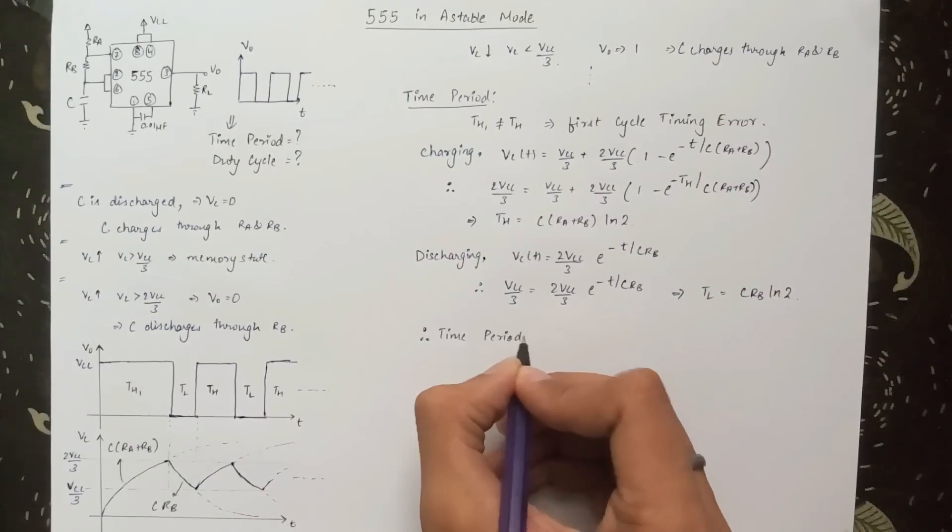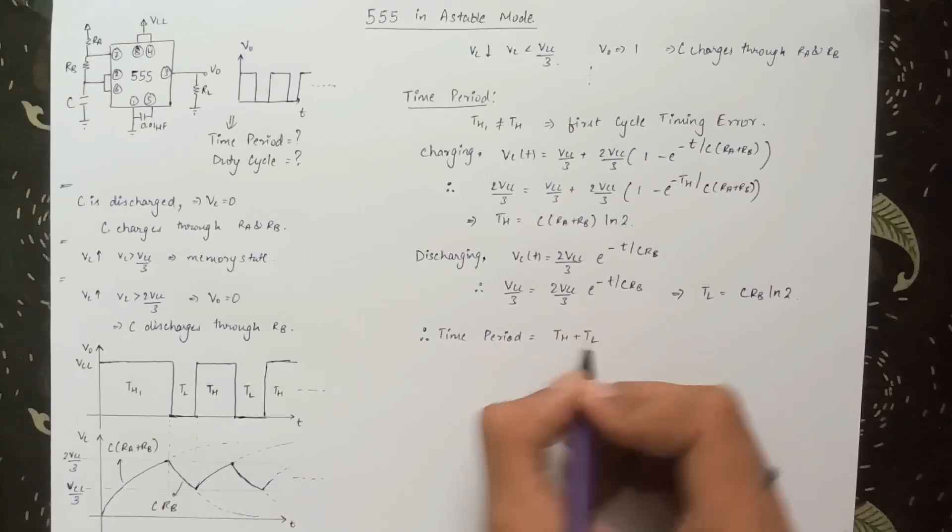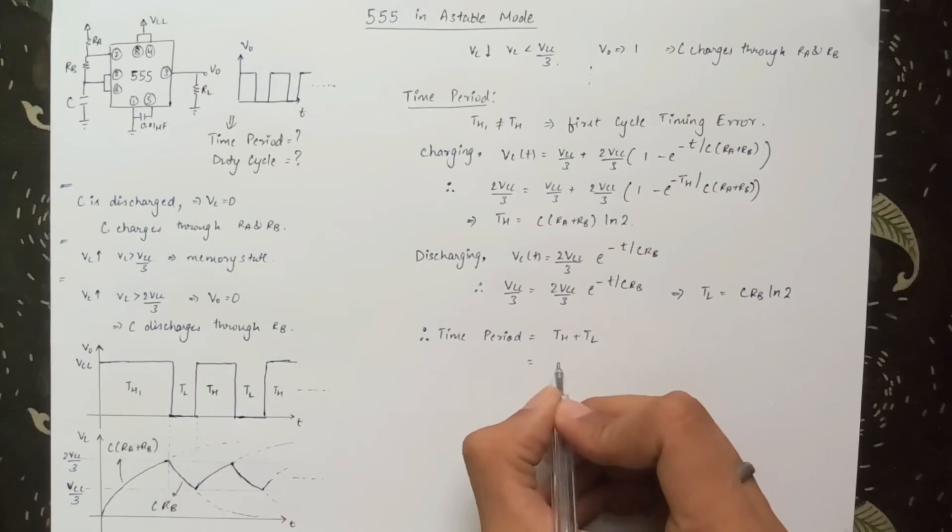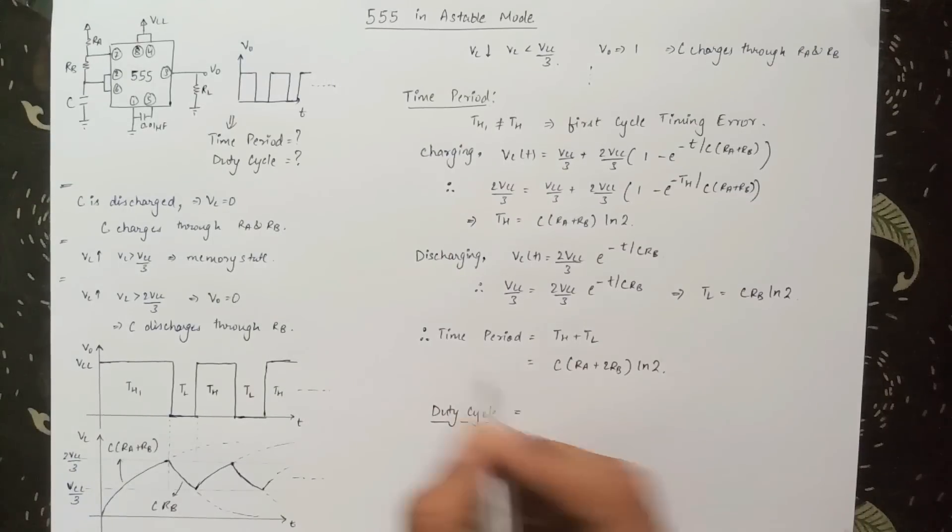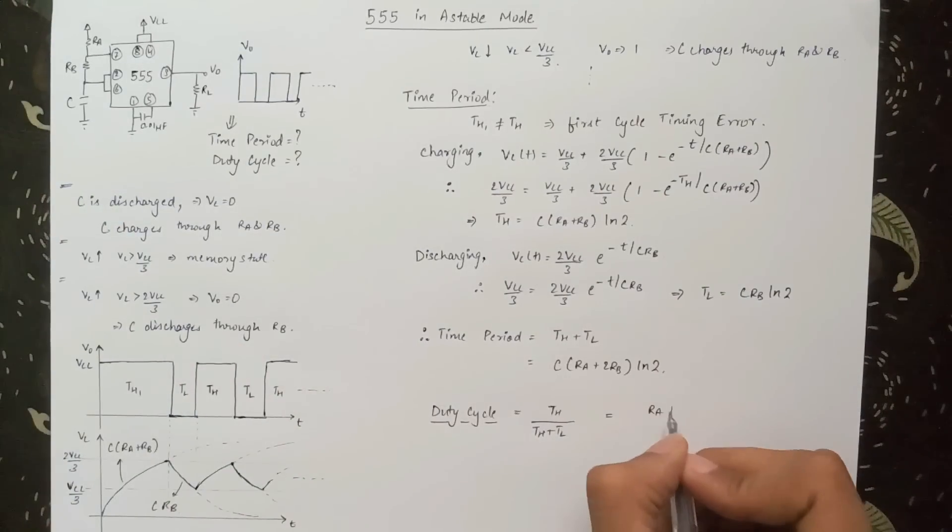So finally, from the graph we can see that the time period is equal to TH plus TL, which equals C times RA plus 2RB times ln 2. And the duty cycle of the output pulse is given as TH upon TH plus TL, which equals RA plus RB upon RA plus 2 times RB.